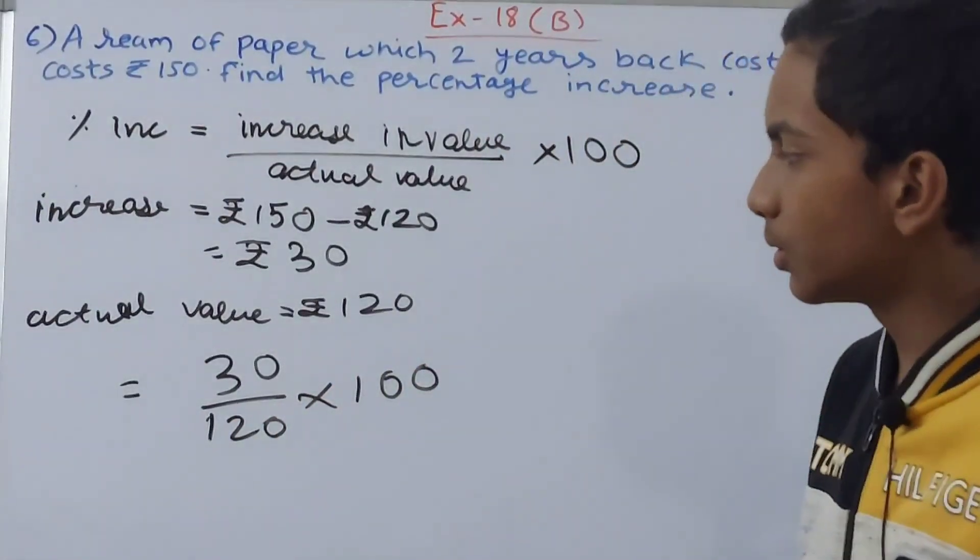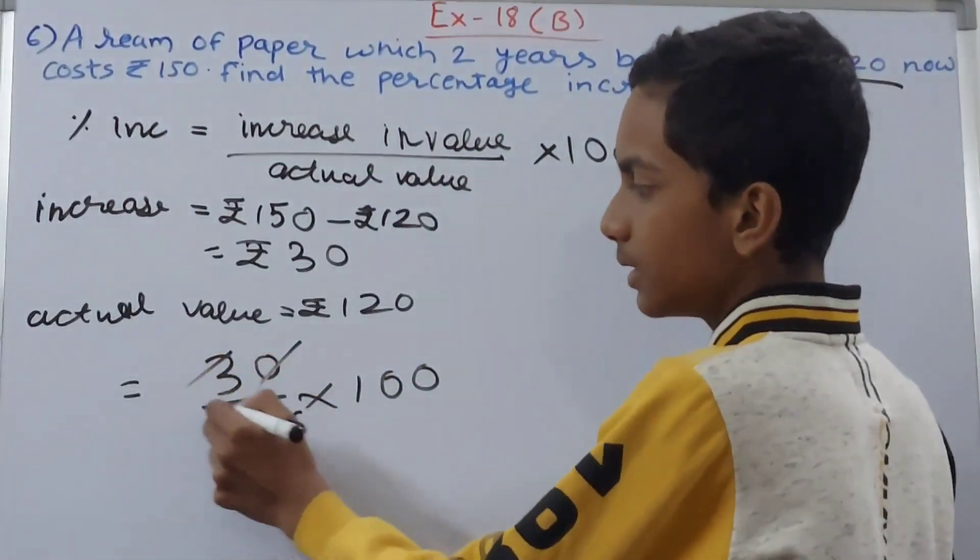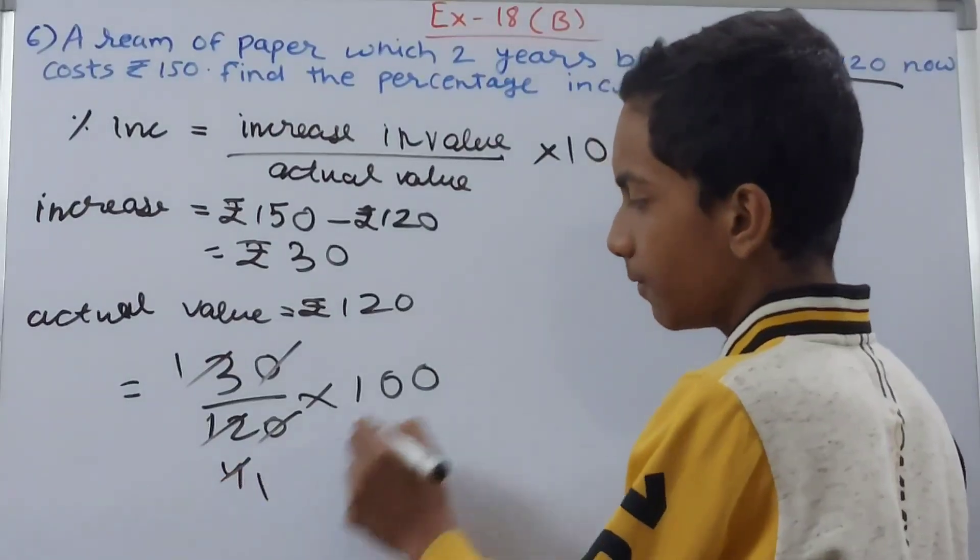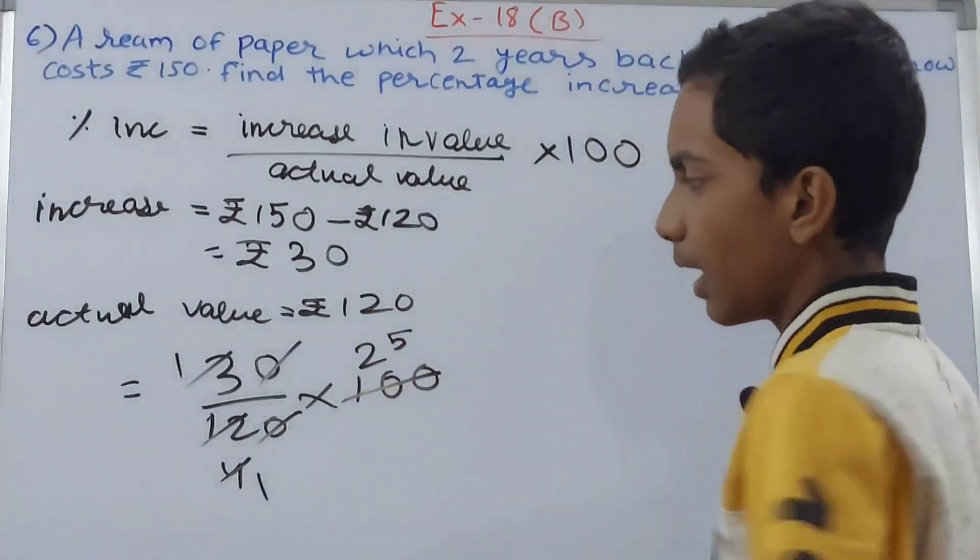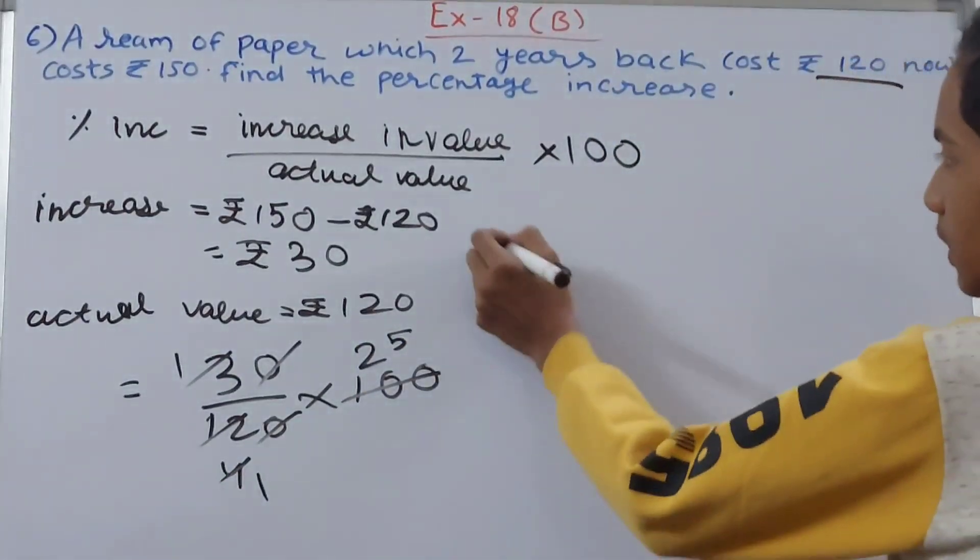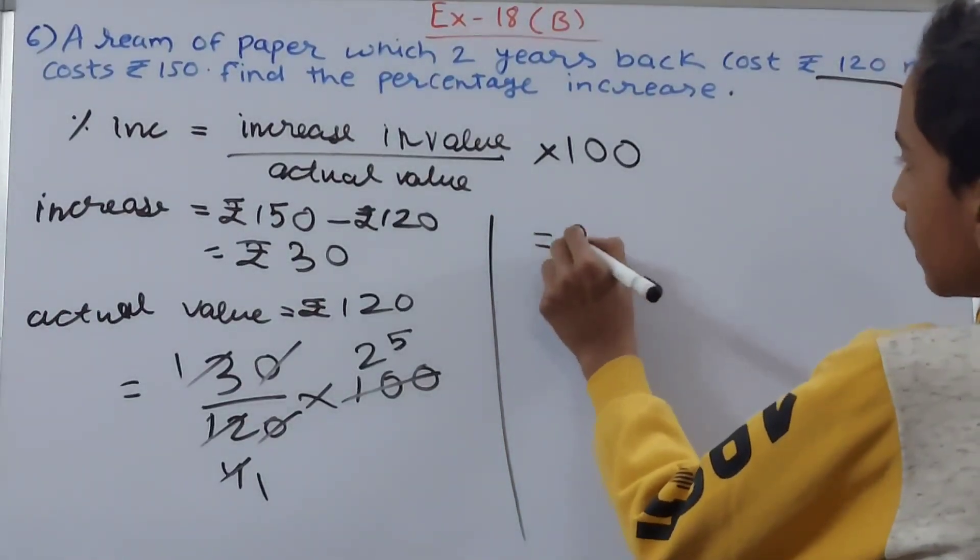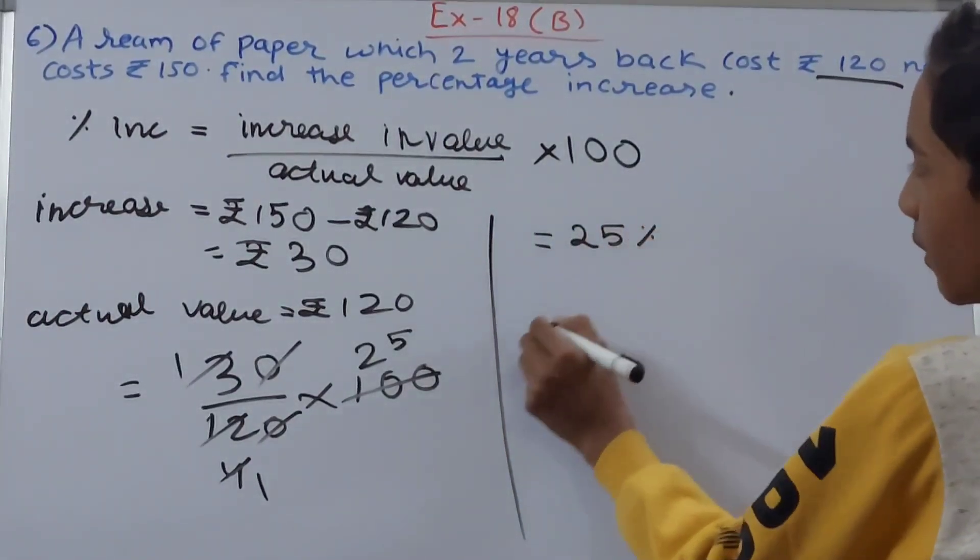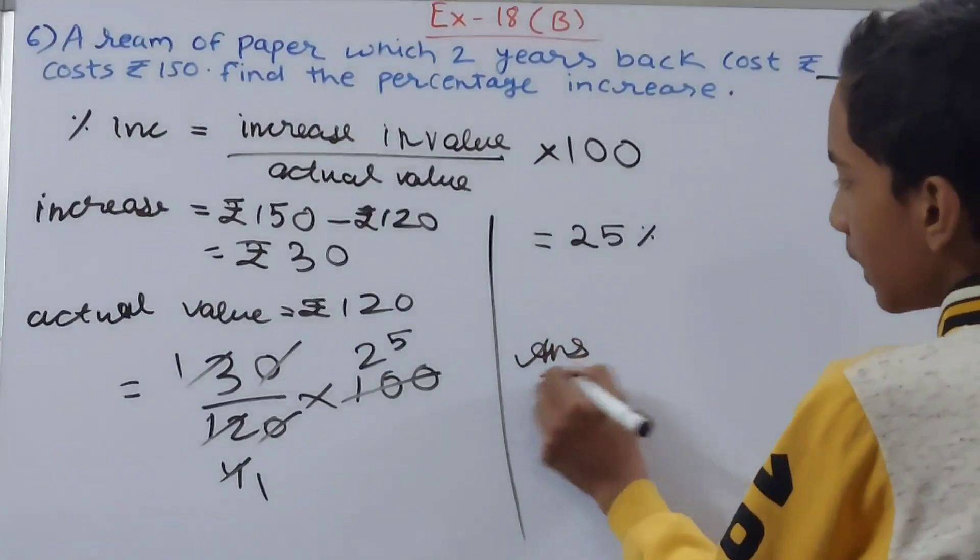Solve this: cut this zero, cut this zero, 1 and 4 goes 25 times. This means the percentage increase is 25 percent. So the answer that we get is 25 percent.